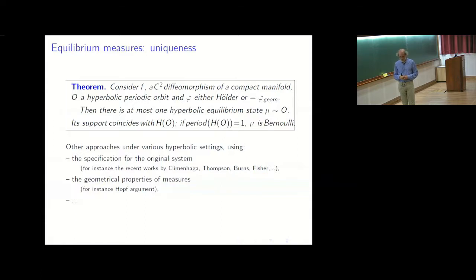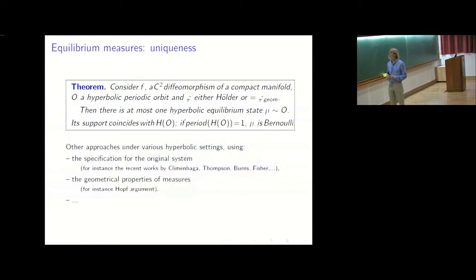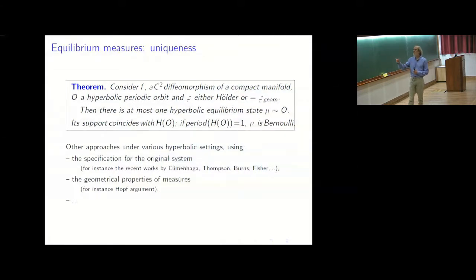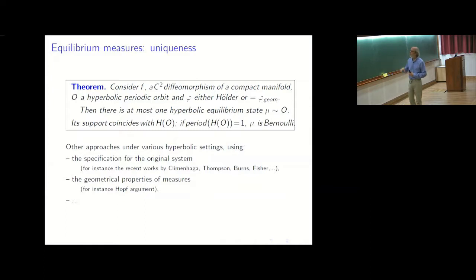You can also describe what kind of measurable dynamics you find. Remember the class has a period: if the period is one the measure is a Bernoulli measure; if the period is k the measure is the product of a Bernoulli measure with the rotation — the permutation over k elements.